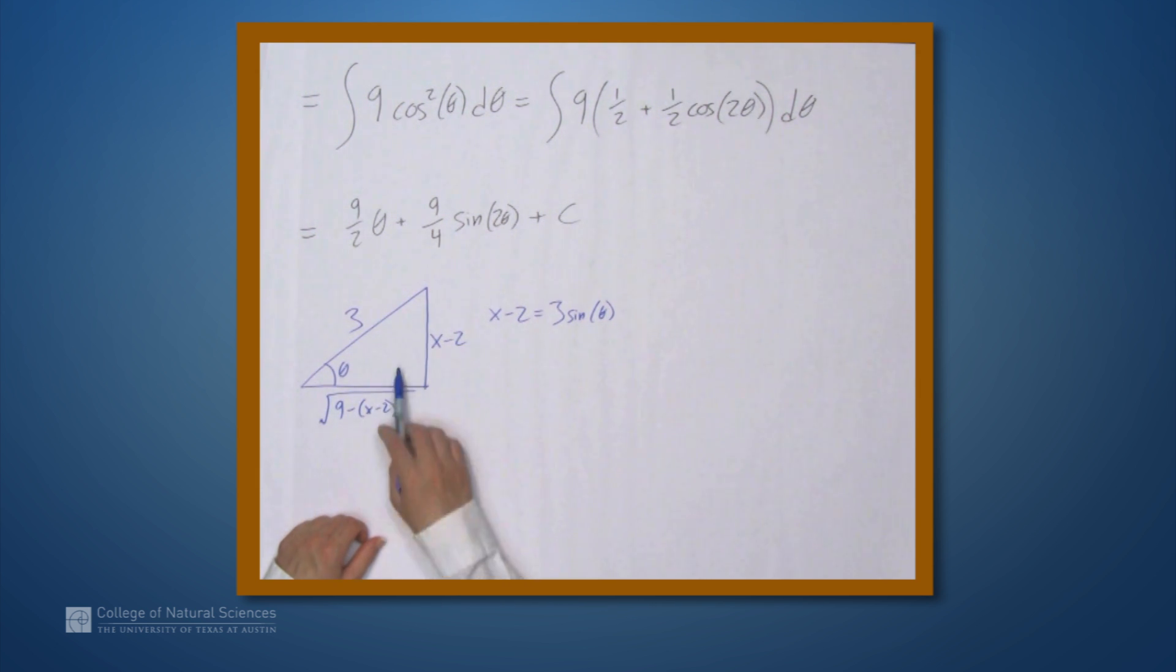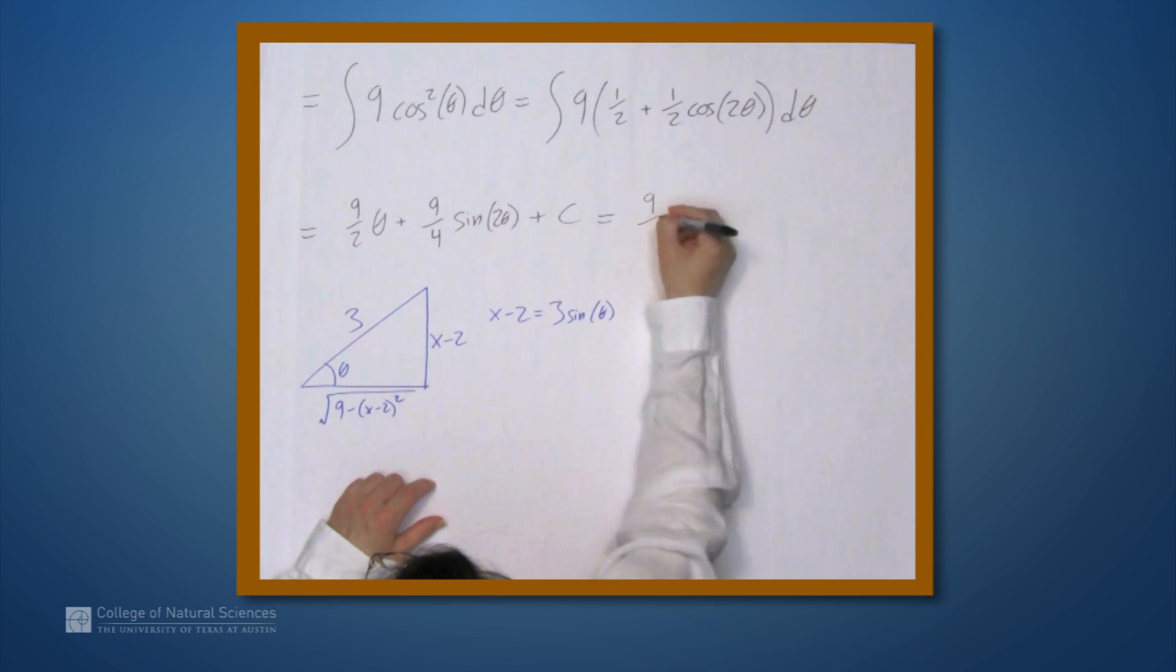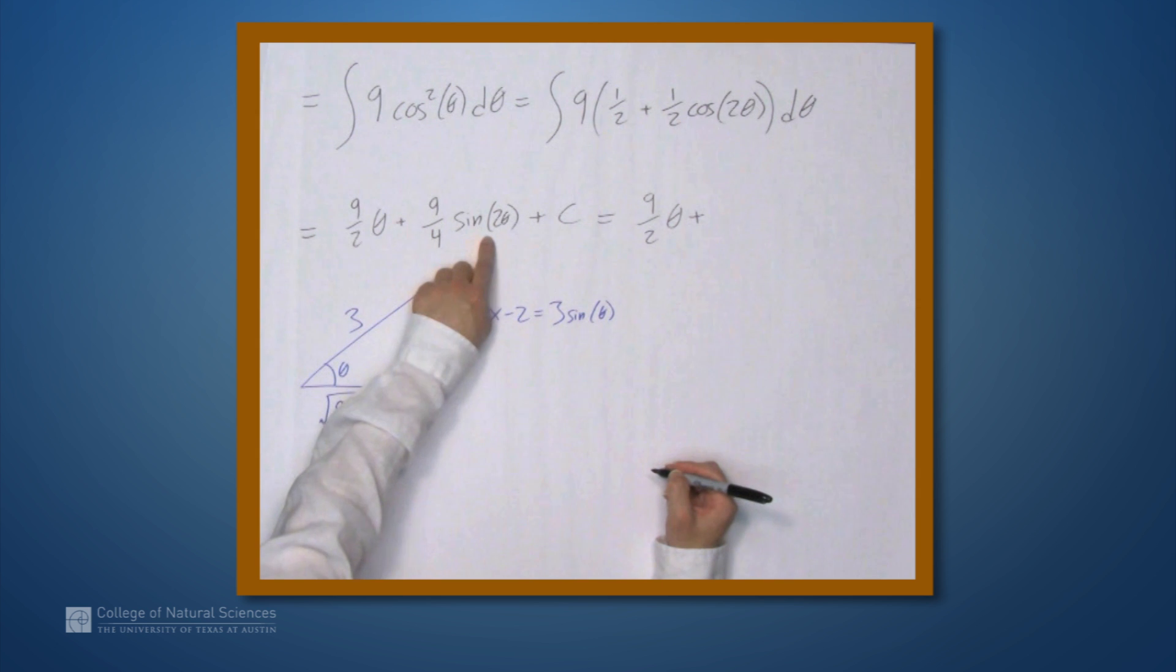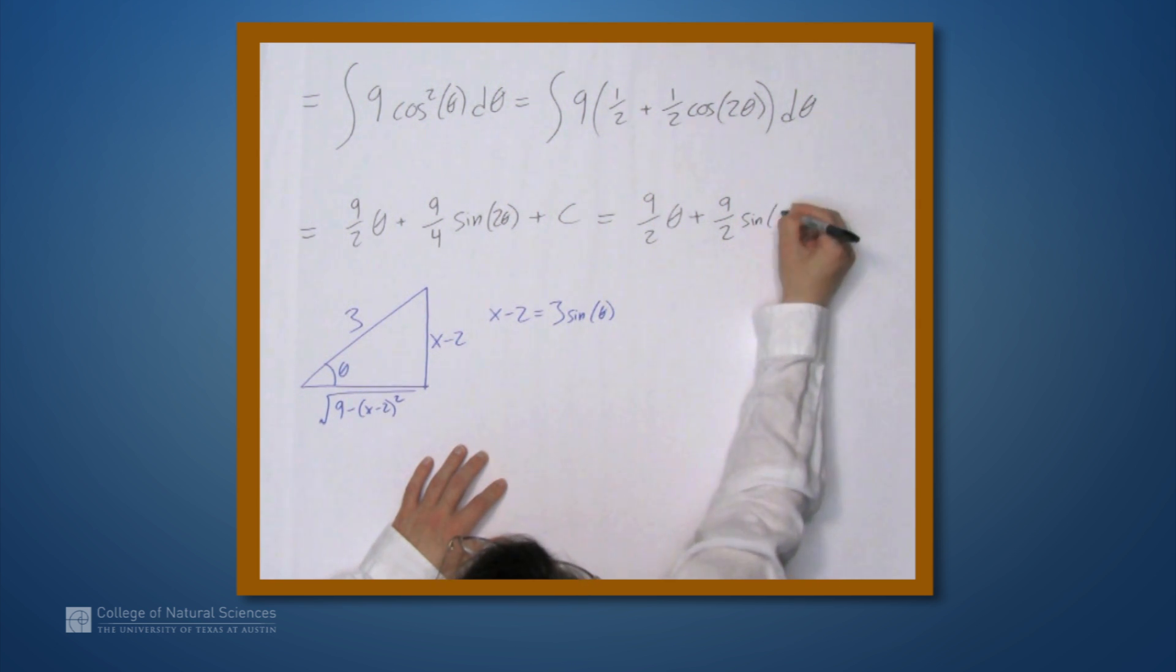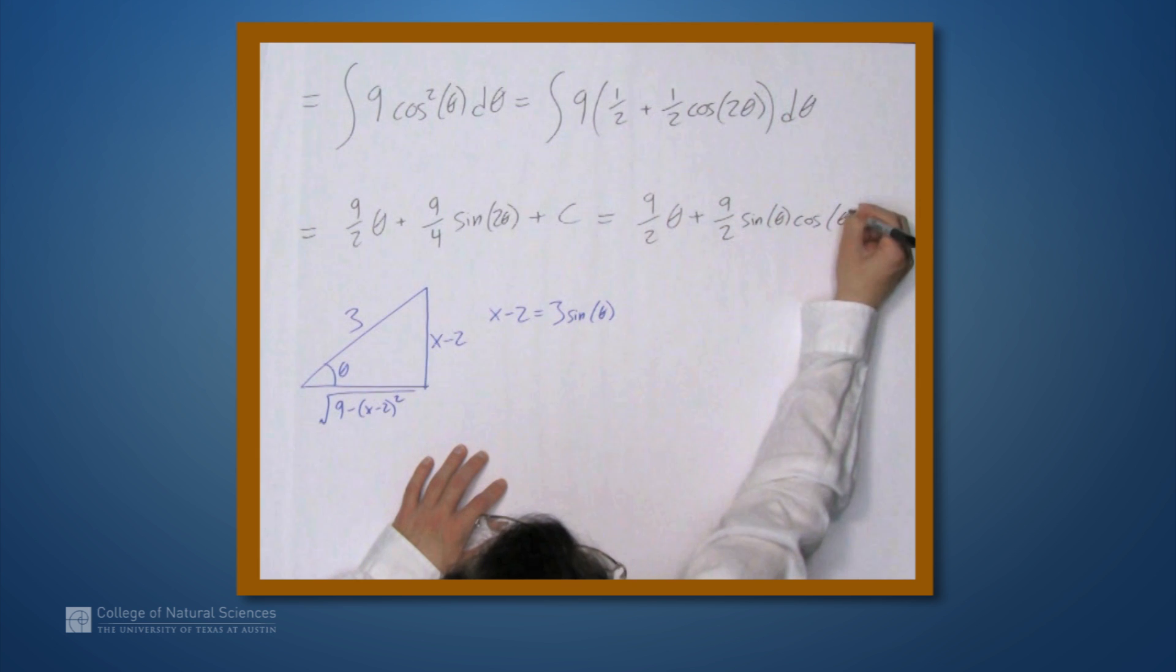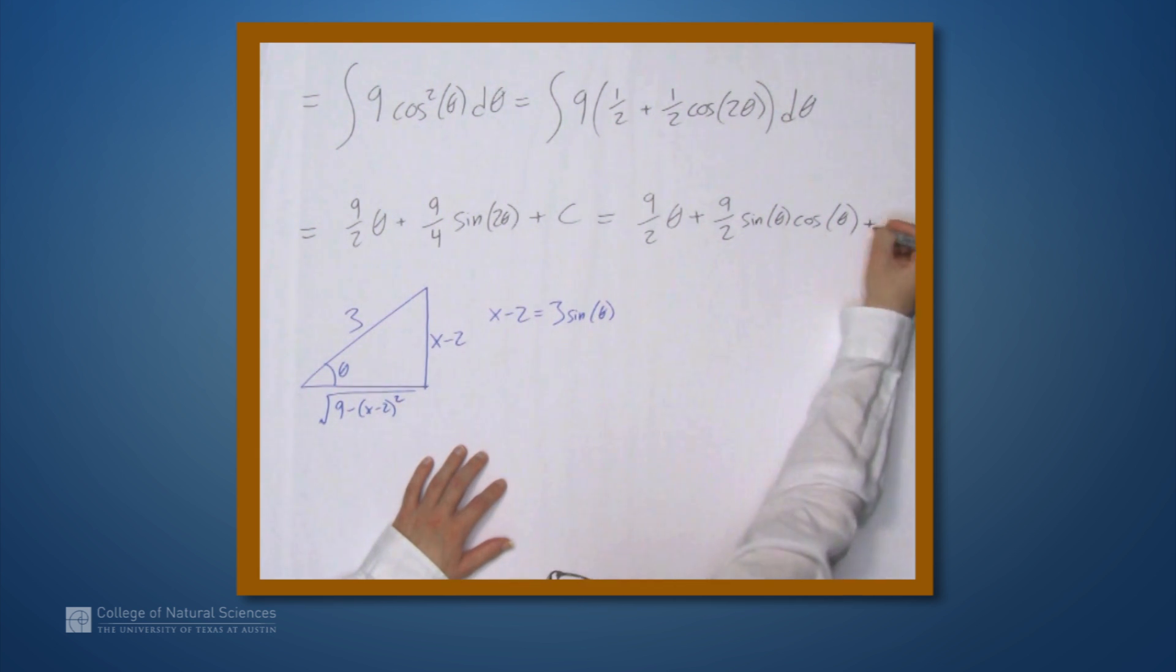So, where can we get sine of 2 theta from this? Because this is what we need. We can get theta, but we need sine of 2 theta. So how do we do that? Well, let's use another identity. So this is 9 halves theta plus something that doesn't involve trig functions of 2 theta, but rather just trig functions of theta. And the identity is that sine 2 theta equals 2 sine theta cosine theta. So 9 fourths sine 2 theta is the same as 9 halves sine theta cosine theta plus c.